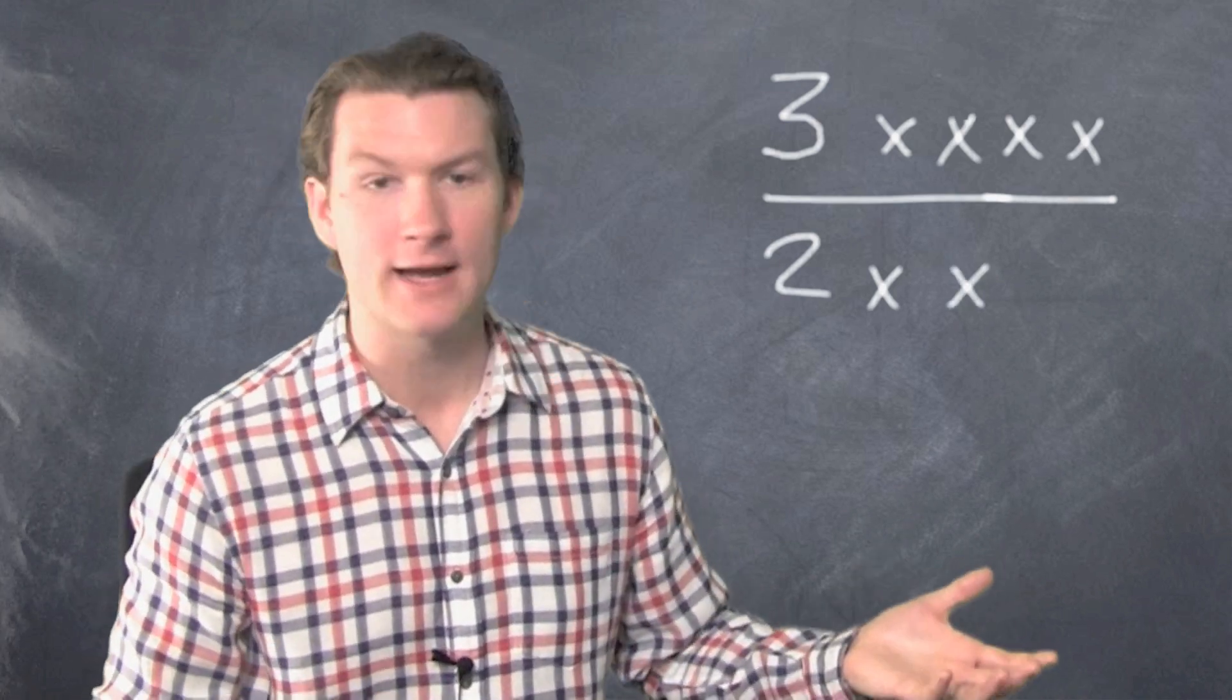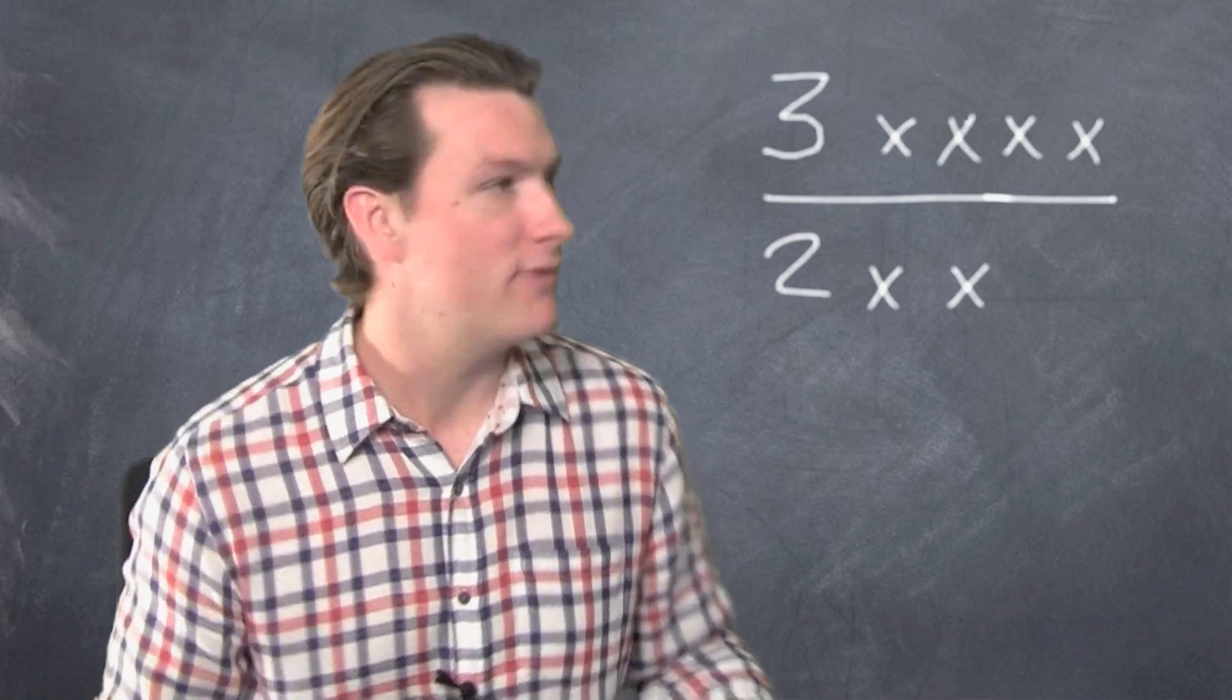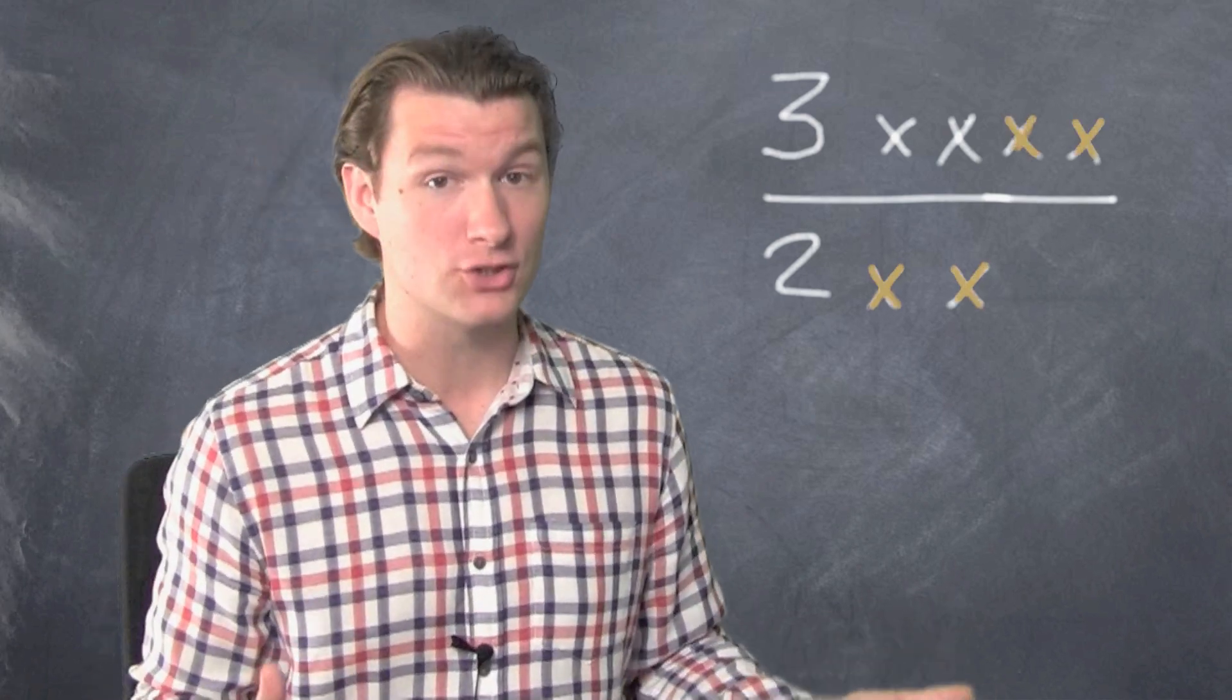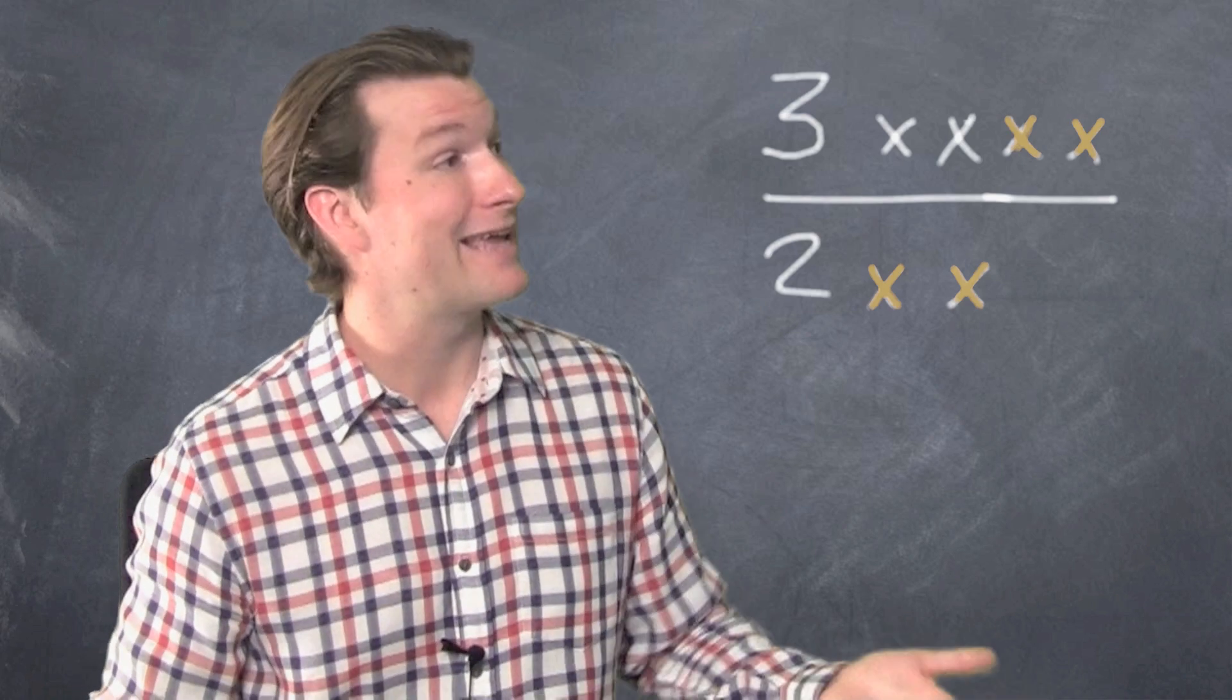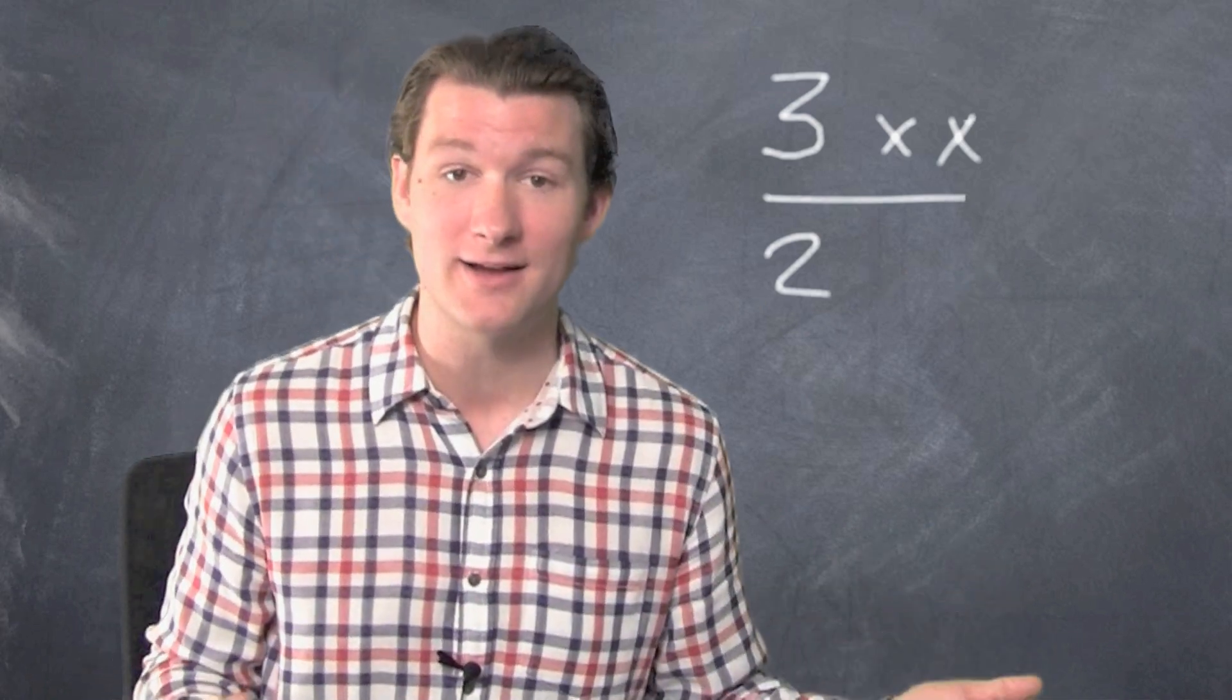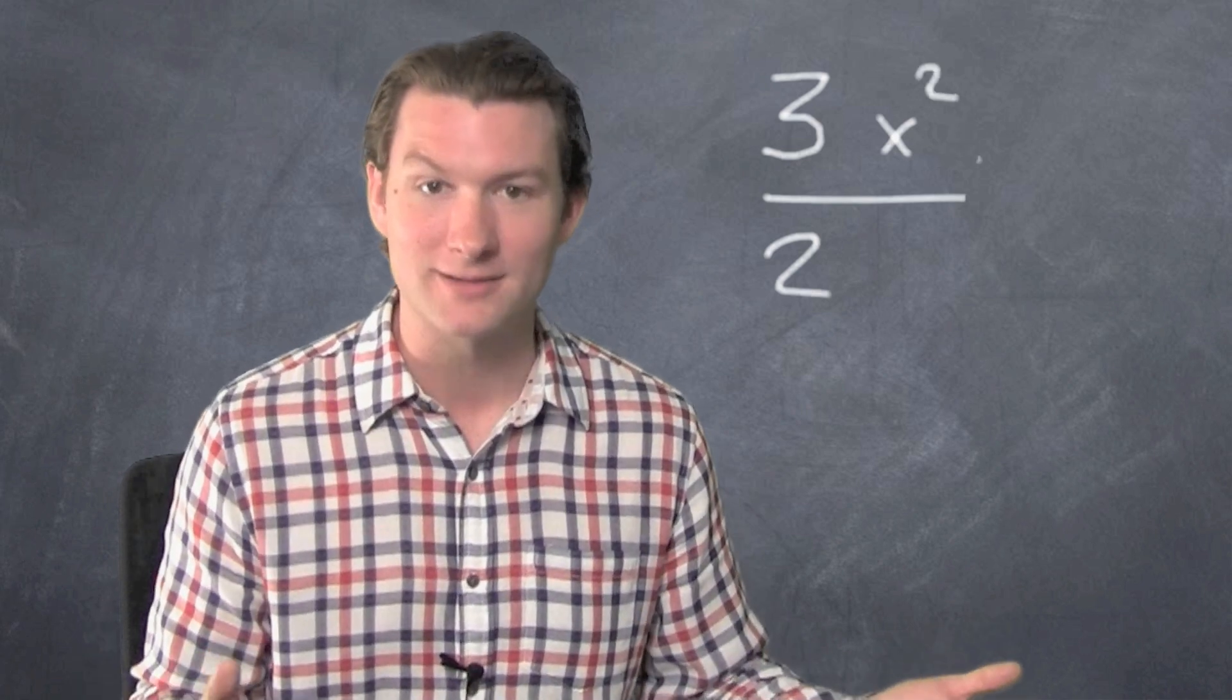Look at these x's. I like to think of it like a battle. We've got the guys on top versus the guys on the bottom. I think the guys on top are going to win because it's 4 versus 2. And the guys on the bottom are going to take out 2 of the guys on top, but we're still going to have x times x left standing on top. And that's x squared remaining on top.